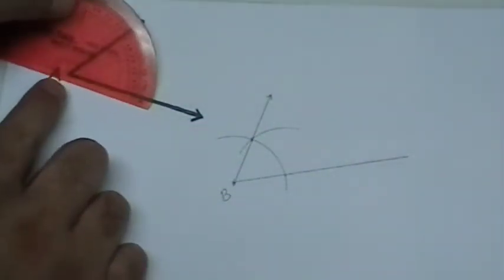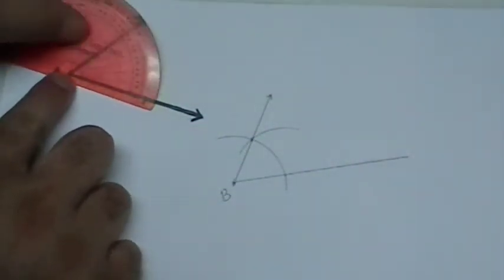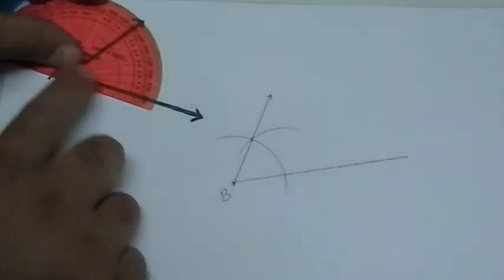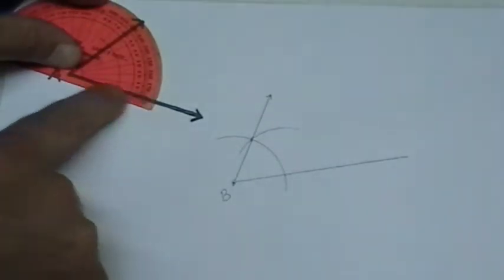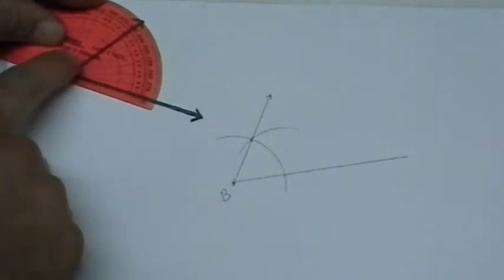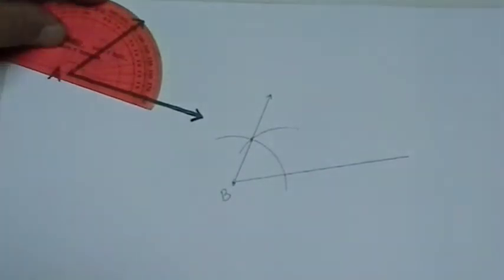I go back to my original angle. I line up the center of the protractor with the vertex. I have the ray going through the zero line and the second ray going through the 60 degree line.